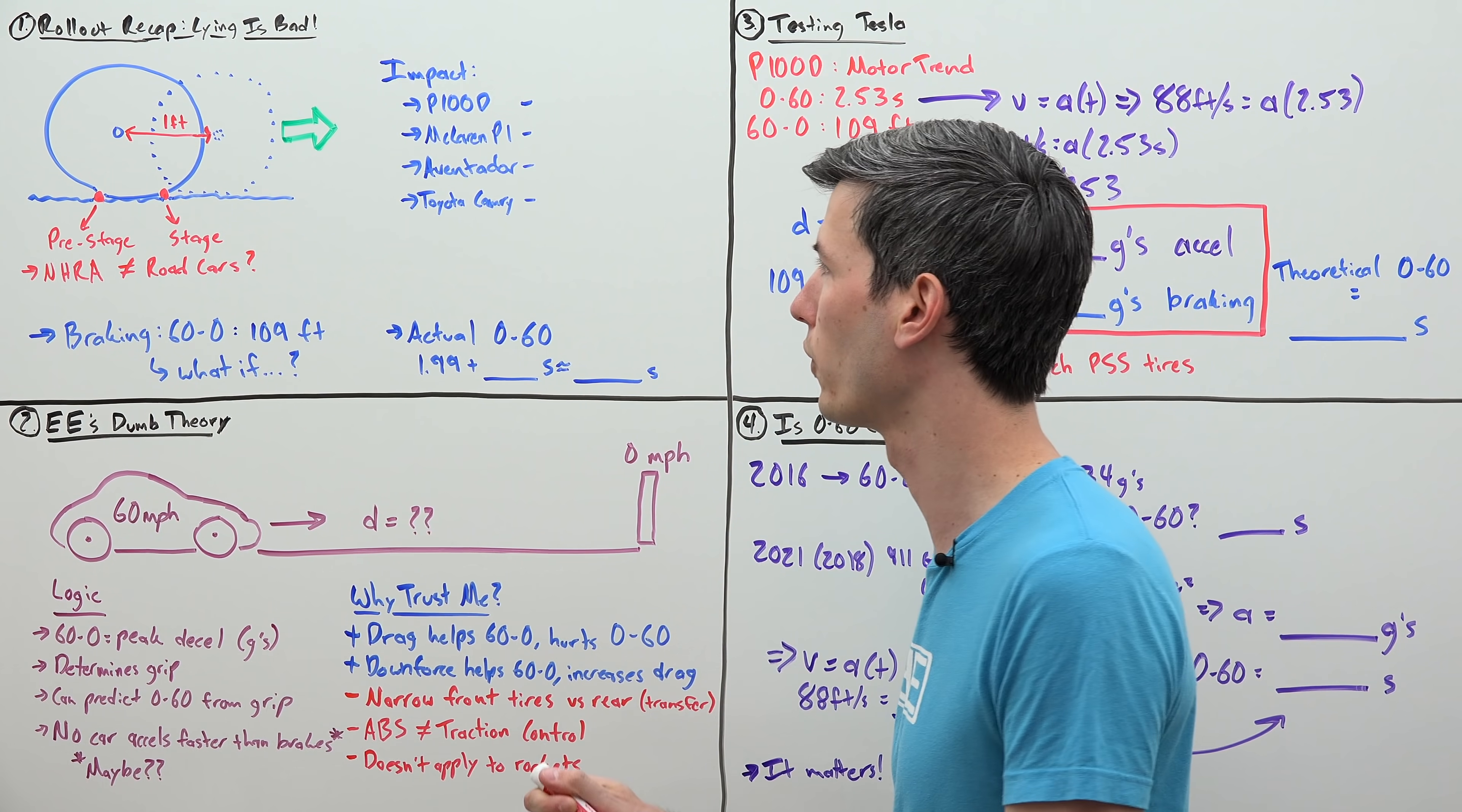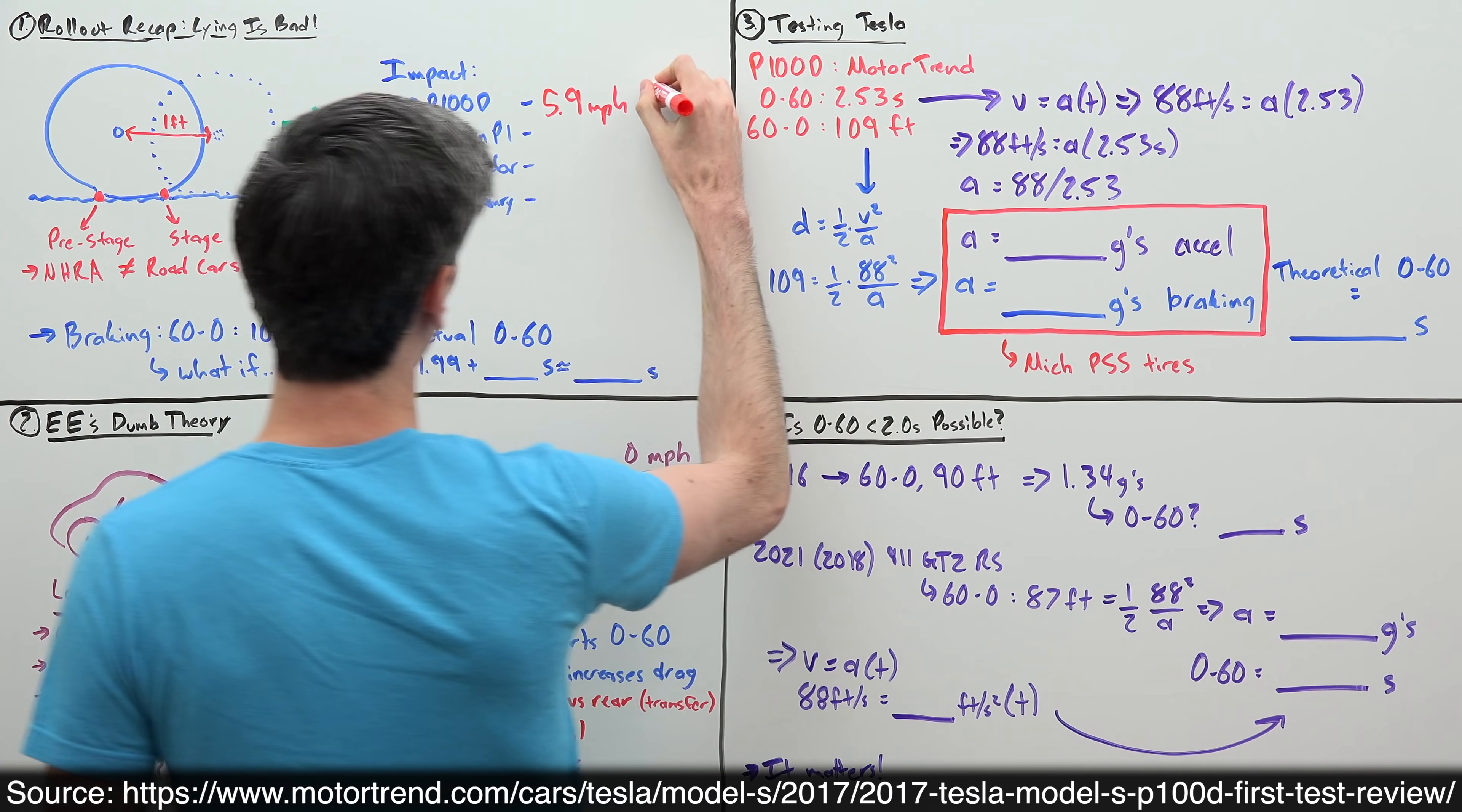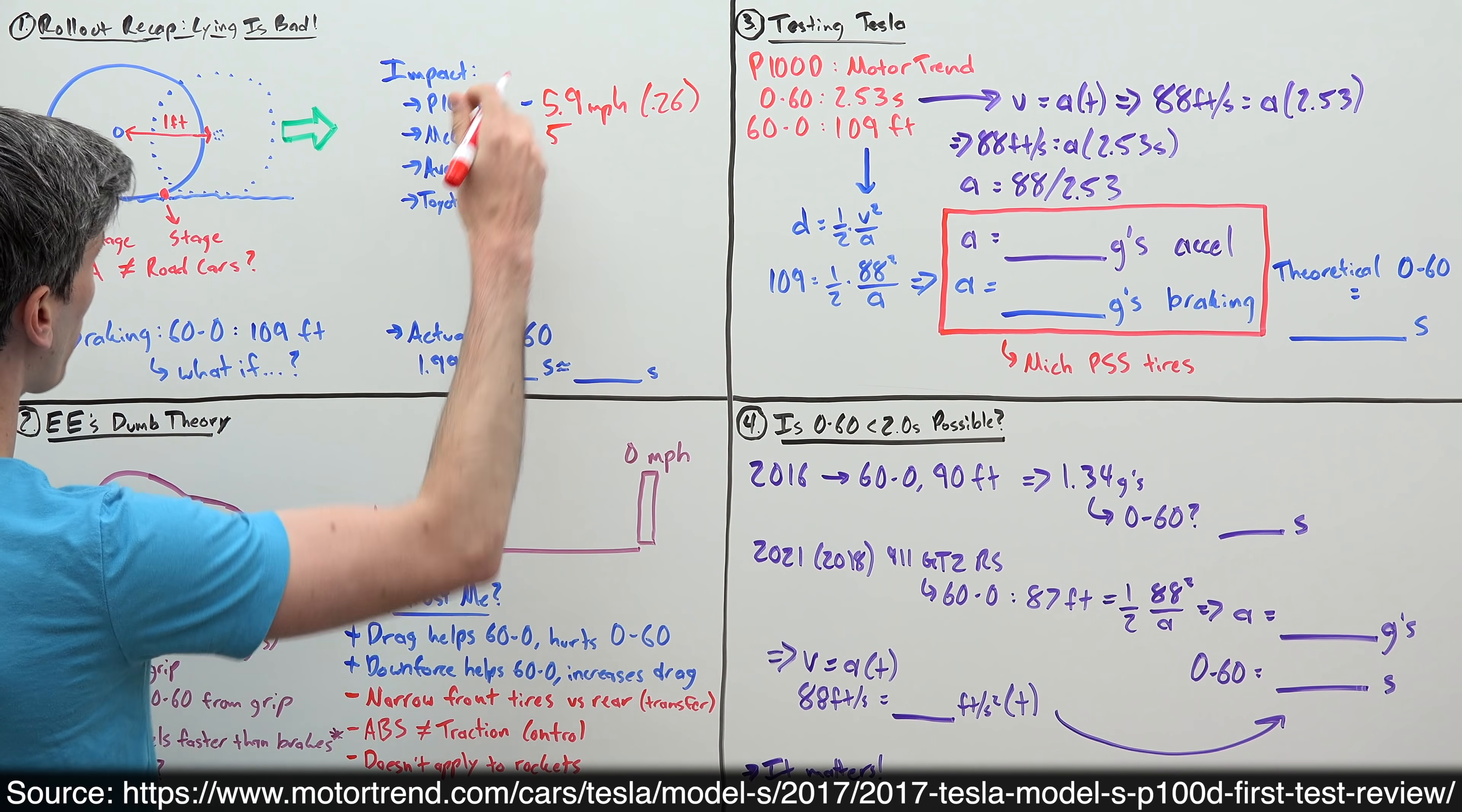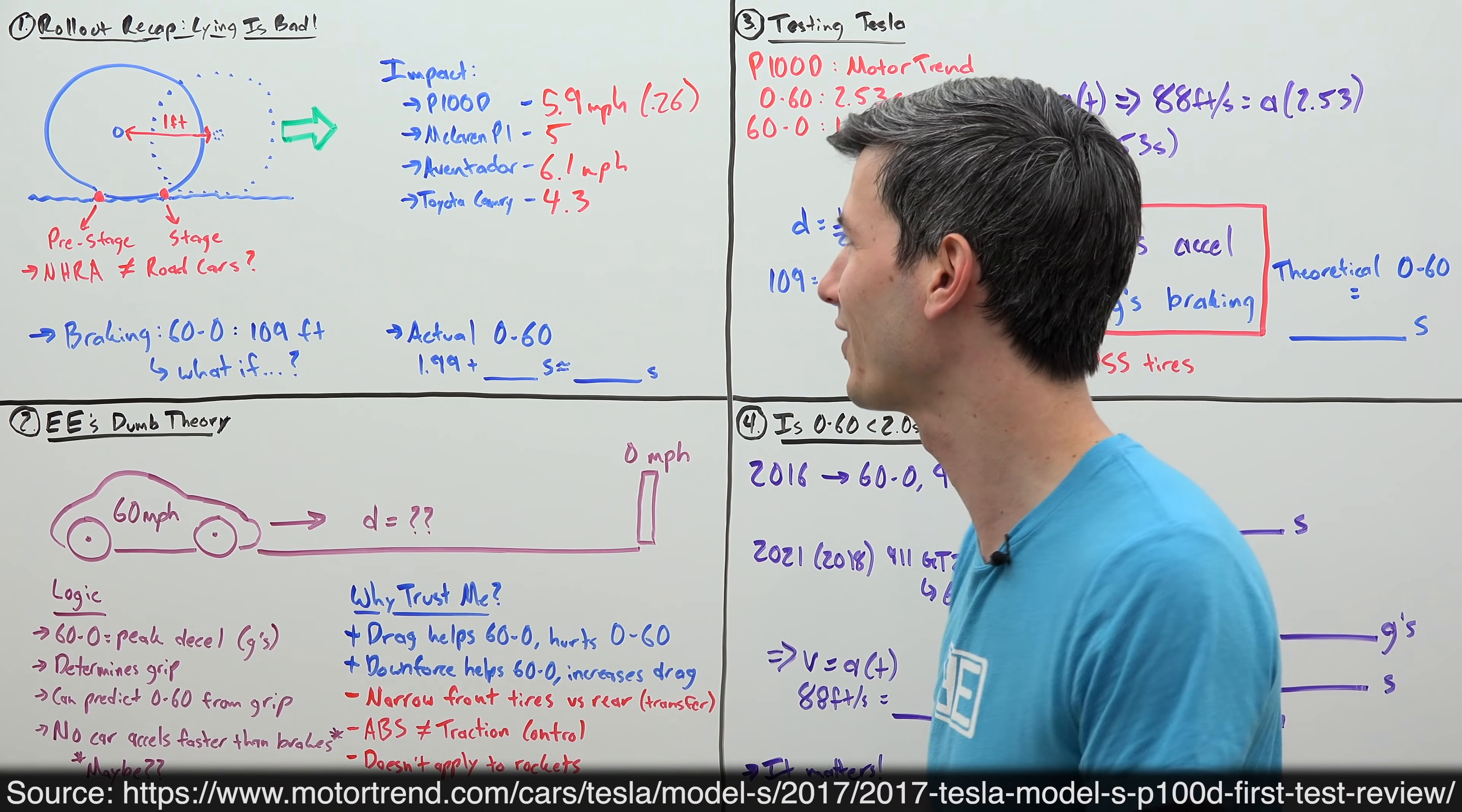So what is the impact of that one foot of rollout? For example, with the Tesla Model S P100D that they tested, it was able to accelerate to 5.9 miles per hour in that first one foot, shaving 0.26 seconds off its 0-60 time. Another example, a McLaren P1 was able to accelerate to 5 miles per hour, an Aventador 6.1 miles per hour, and a Toyota Camry 4.3 miles per hour in that first foot.